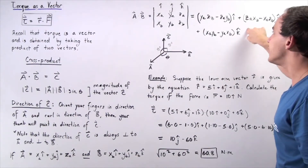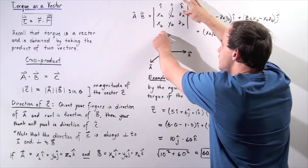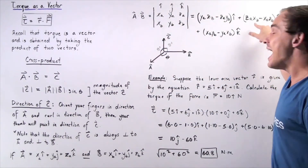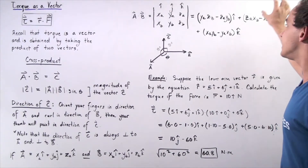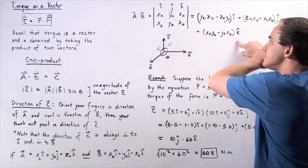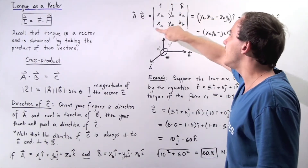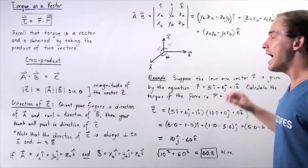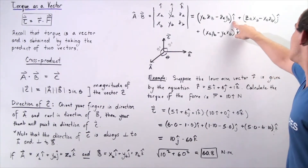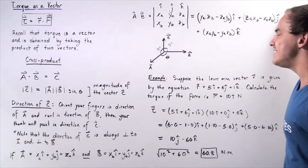For the Y component (ĵ), we compute Z_A times X_B minus X_A times Z_B. That gives us the Y component quantity. For the Z component (k̂), we multiply X_A times Y_B and subtract Y_A times X_B. That gives us the Z component. So we have î, ĵ, and k̂, and this combined vector is our vector C.